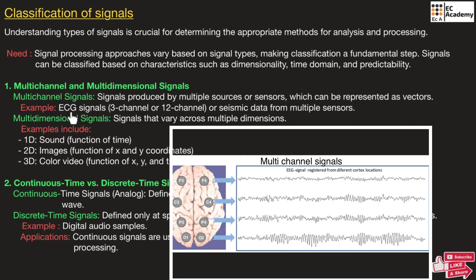For example, an ECG signal can be produced using 3 channels or 12 channels, so we can say the ECG signal is a multi-channel signal. There is one more example of multi-channel signal which is seismic data, obtained or produced by multiple sensors.